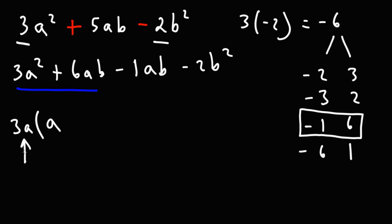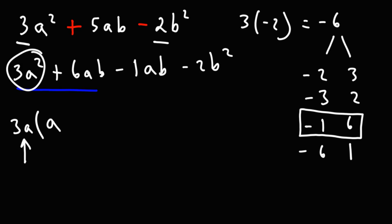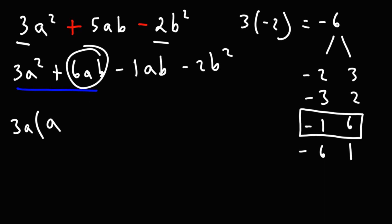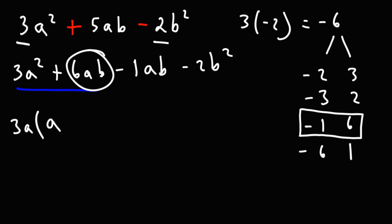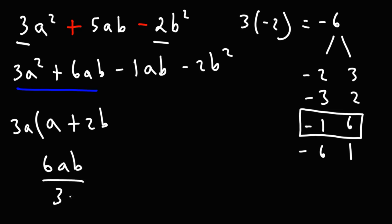If you're wondering why 3a is the GCF: out of 3a squared, the most you can take out is a 3 and at least one a. From 6ab, you can also take out a 3 and an a, but not a b because the first term doesn't have it. Removing 3a from 6ab, divide them: 6ab divided by 3a. The a variables cancel, 6 divided by 3 gives you 2b.